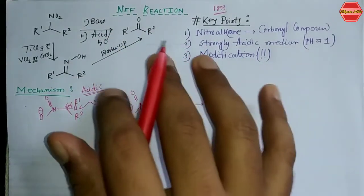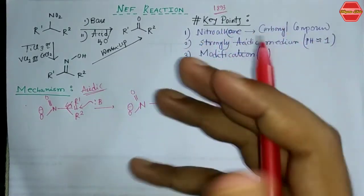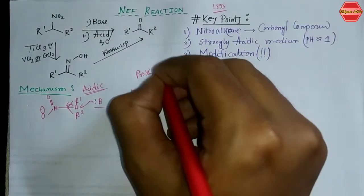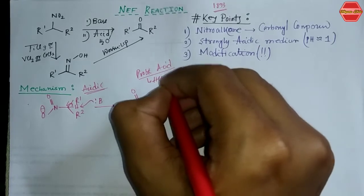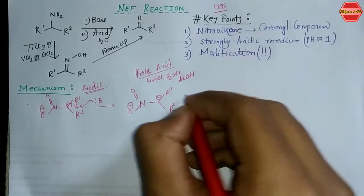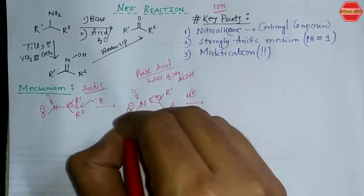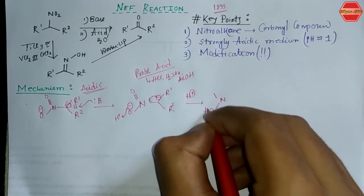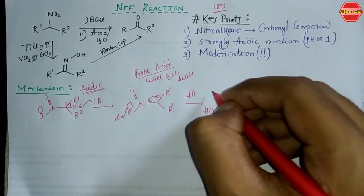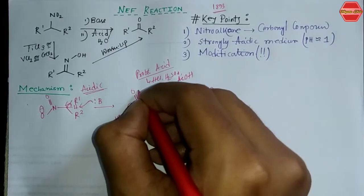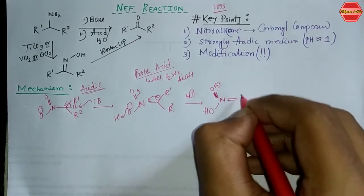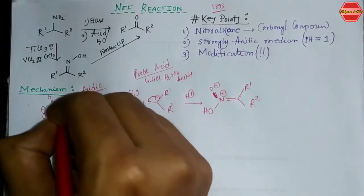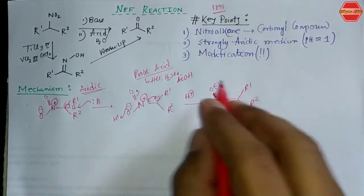Under acidic conditions — using H₂SO₄, HCl, or acetic acid as a protic acid — in the presence of H⁺, the negative charge takes a proton, giving a product with an OH group. This forms a double bond to oxygen, and rearrangement gives a positive charge on the nitrogen center. This intermediate is called nitronic acid.